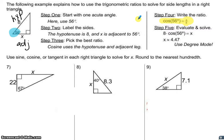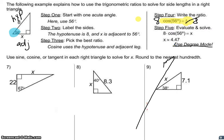We cannot solve as-is with x divided by 8, so to cancel out we would multiply both sides by 8. That gives us 8 times cosine of 56 degrees is equal to x. While you're doing your homework on your own, I would want you to leave your answer like that — 8 times cosine of 56 degrees equals x — because I don't want you to accidentally mess anything up.